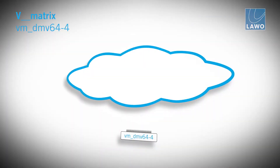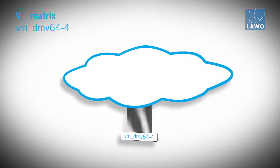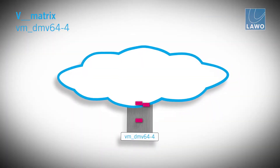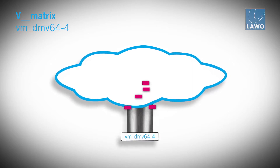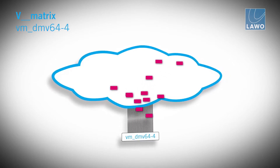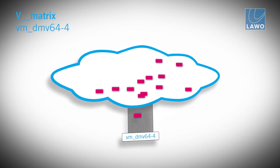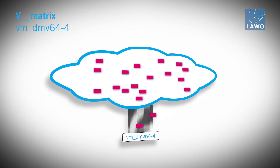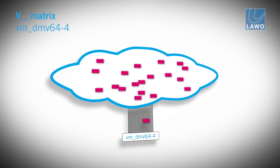Each mipmap is a quarter resolution of the previous generation. We generate 4 layers of mipmaps and send these mipmaps back into the IP network. So now you have your original source and all these mipmaps inside the IP cloud.